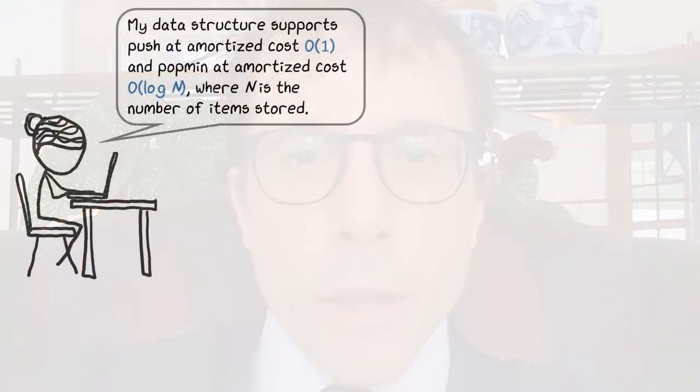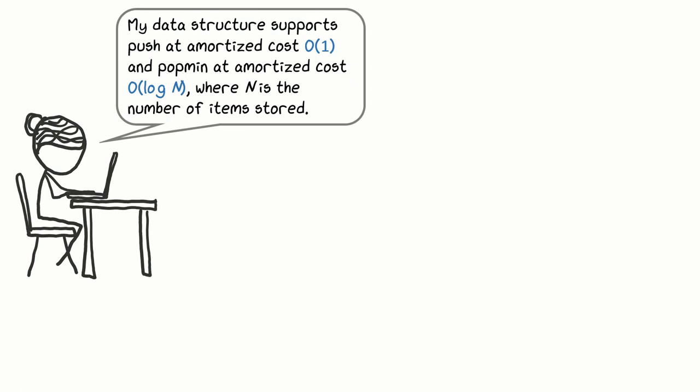Okay, so that's the abstract definition of amortized cost. Let's look at how we use the definition in practice. Concretely, suppose someone tells you: This data structure supports push at amortized cost big O of 1, and pop min at amortized cost big O of log N. Here's what they mean.